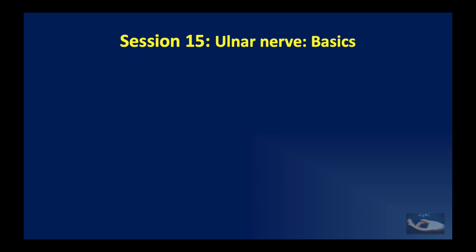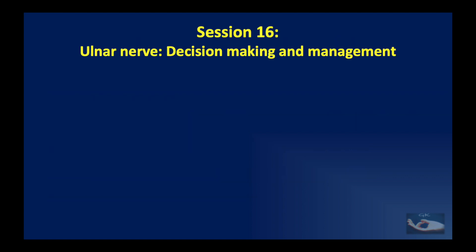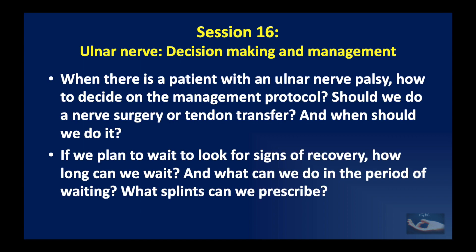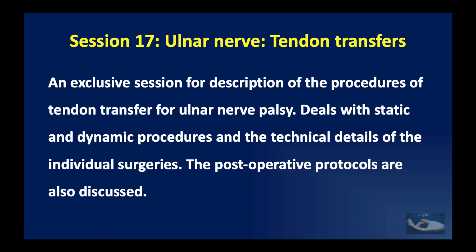After the median nerve, we discuss the ulnar nerve — starting with the basics: the specific anatomy, clinical examination and findings, accurate assessment of the problem, and discussion on entrapment neuropathy including cubital tunnel syndrome. Then there will be a session on decision making and management in ulnar nerve problems: nerve surgery versus tendon transfer, whether they can be combined, how long to wait for signs of recovery, and details of the ulnar claw correction splint. This is followed by an exclusive session on tendon transfers for ulnar nerve injuries, covering static and dynamic procedures, technical details, and post-operative protocols.